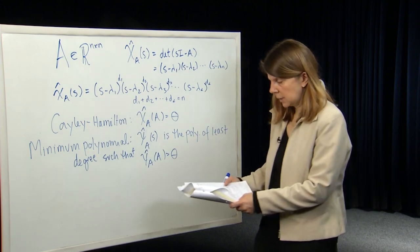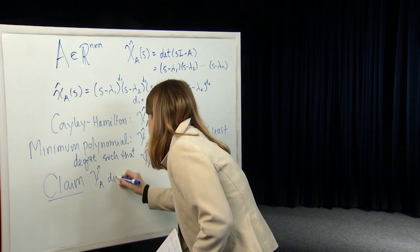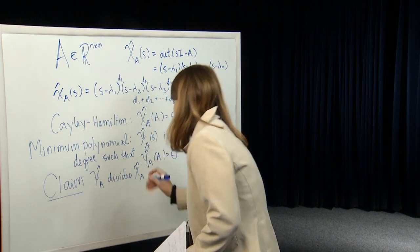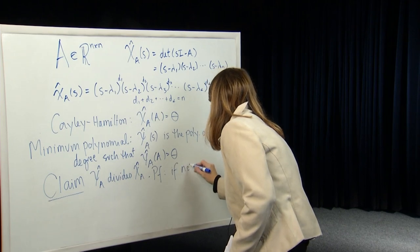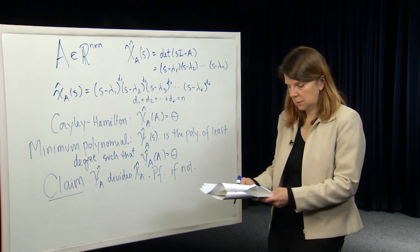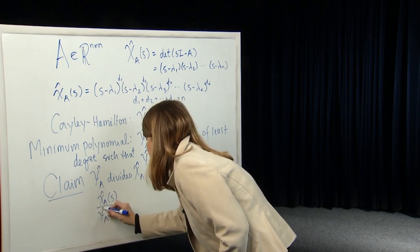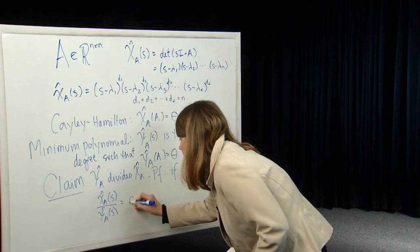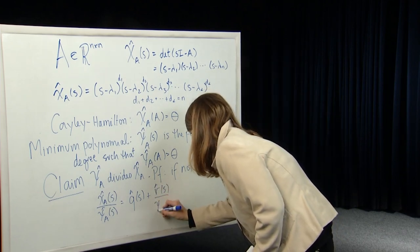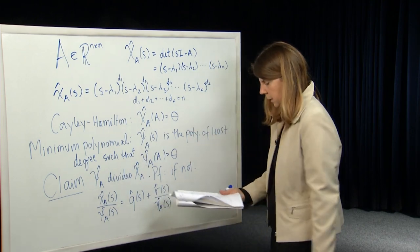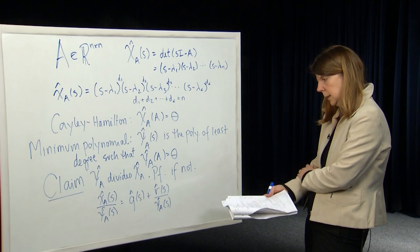With that definition, we can say a few things. First, let's make a claim: the minimum polynomial divides the characteristic polynomial perfectly — without any remainder. The proof is easy. If it didn't divide perfectly, you would get a remainder. So we write: χ̂_A(s) / ψ̂_A(s) = q̂(s) + r̂(s)/ψ̂_A(s), where the degree of r̂ must be less than the degree of χ̂_A, so less than n.